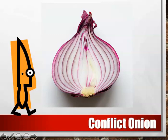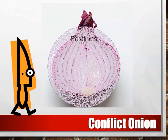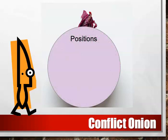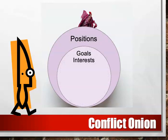You basically draw three embedded circles. The first one you label as positions. The second one you label as interests and goals. And the third one you label as needs. Generally, you would want to draw one diagram for each of the main conflict parties, so you would usually need to make at least two onions. Once you have drawn your basic template, you can think about the positions, goals, and needs of the parties and write that information in the corresponding circle.